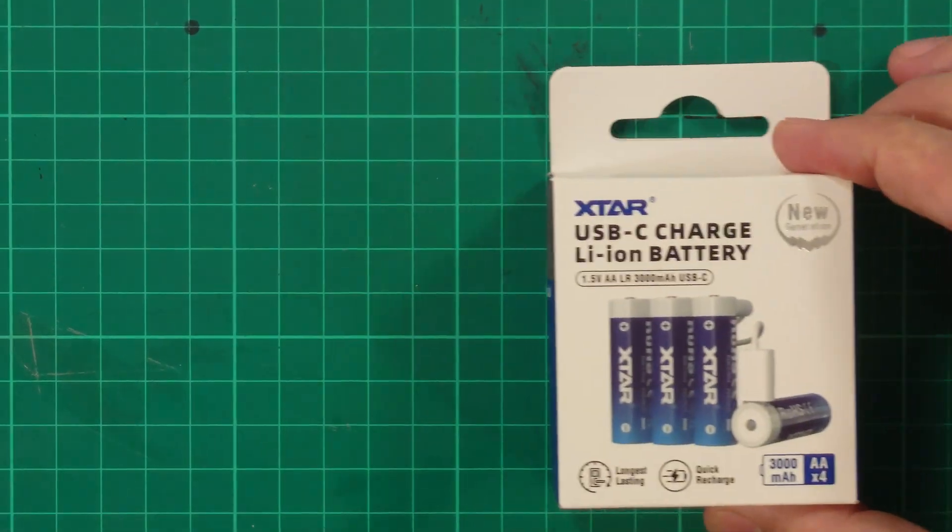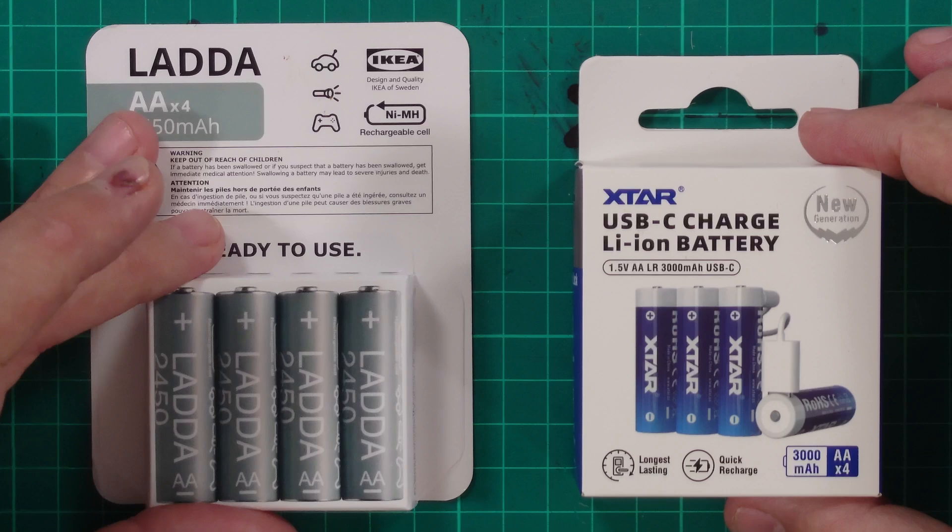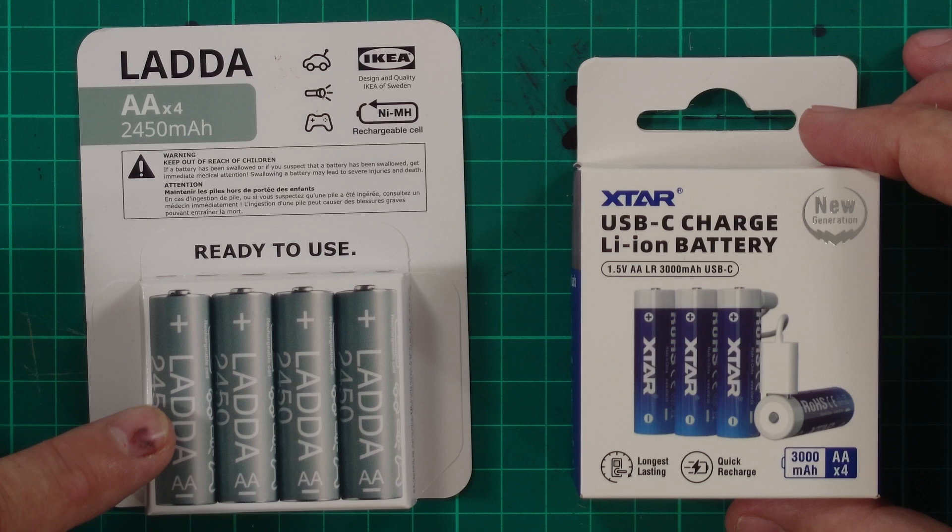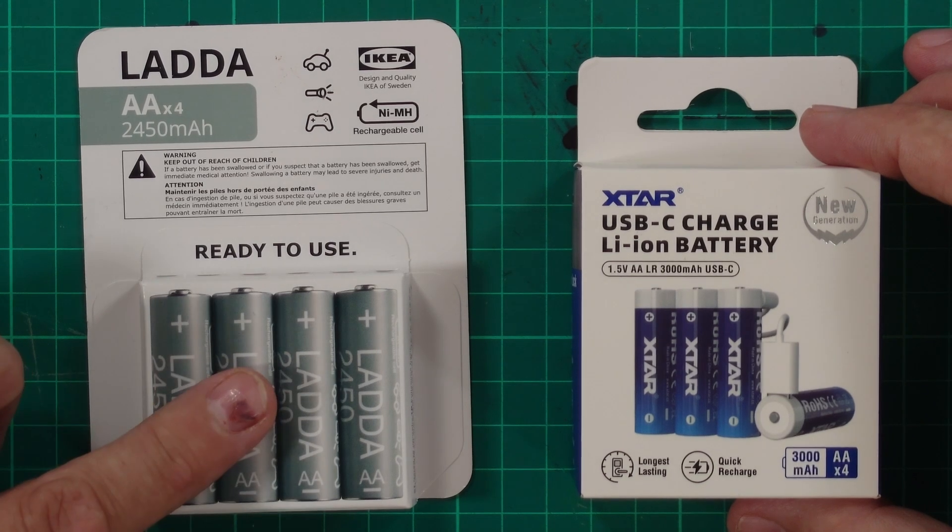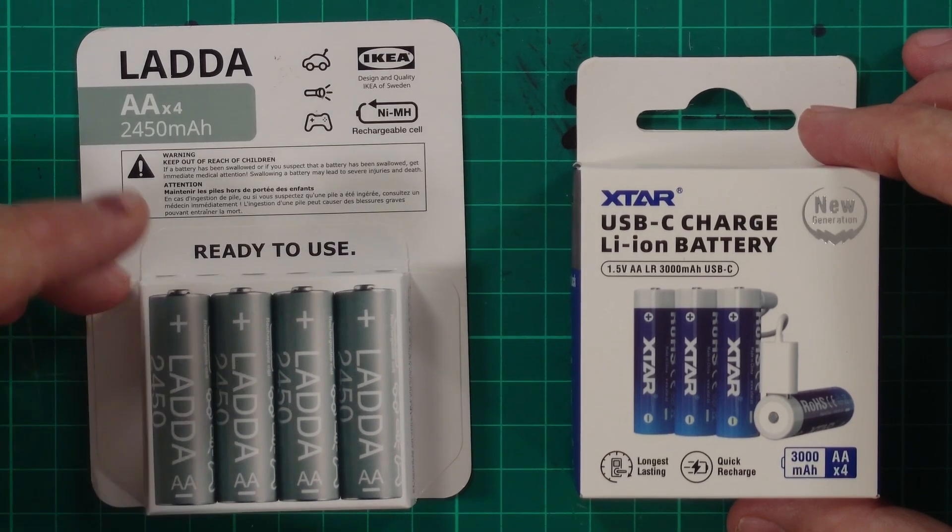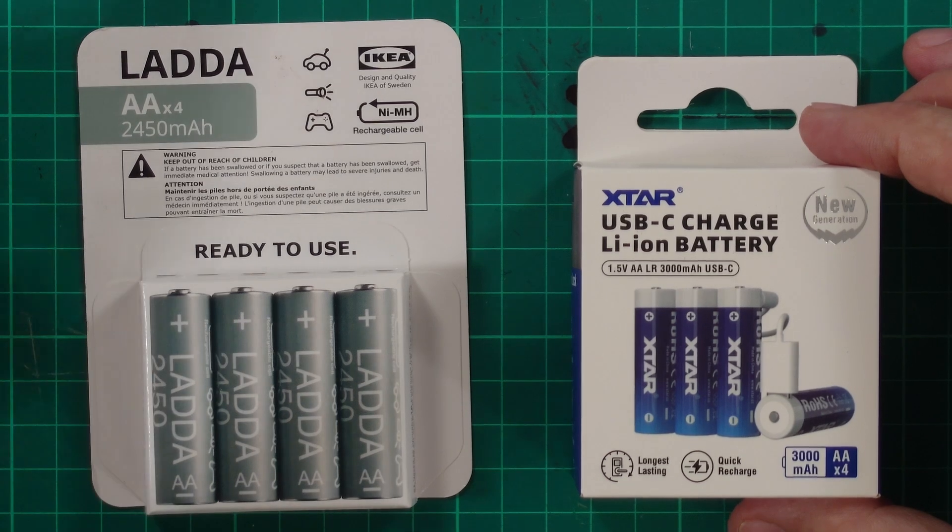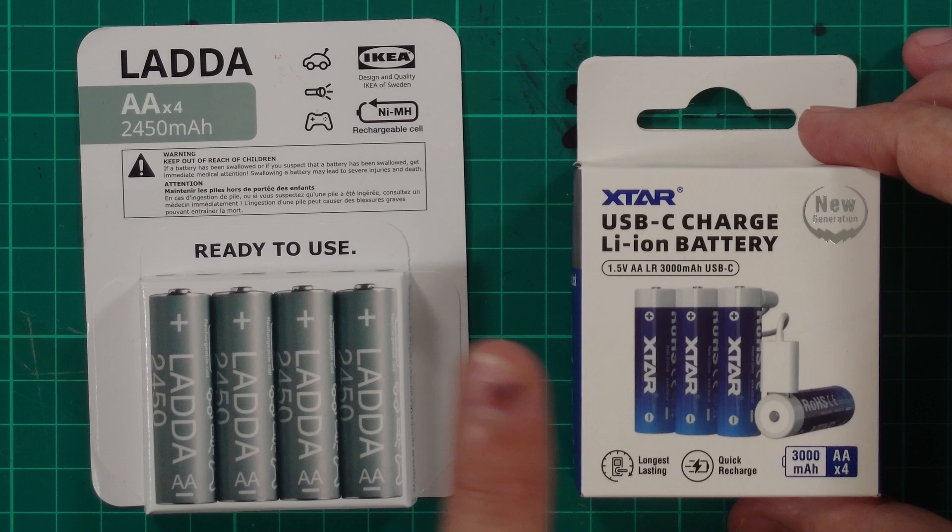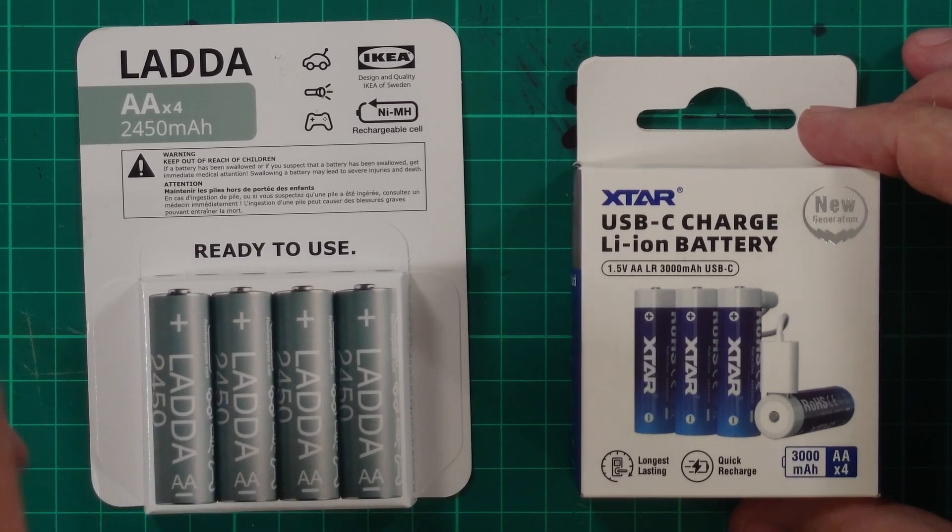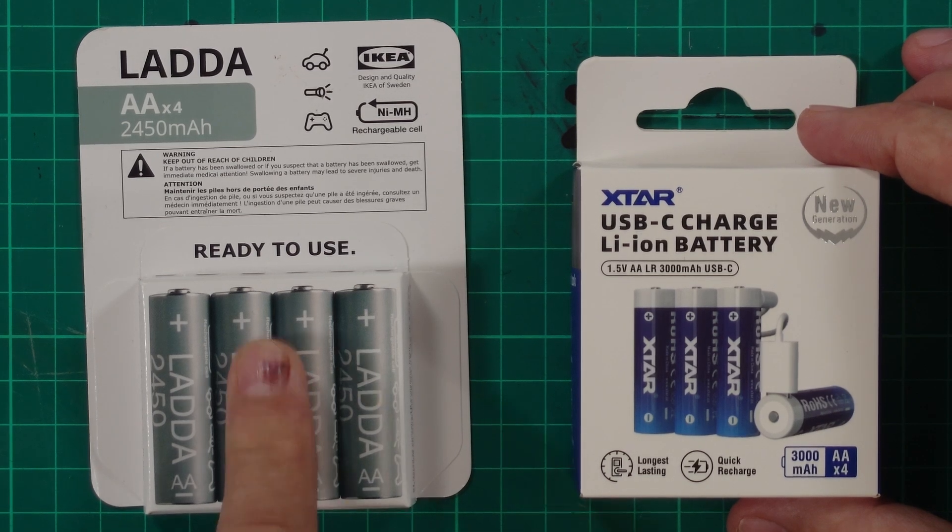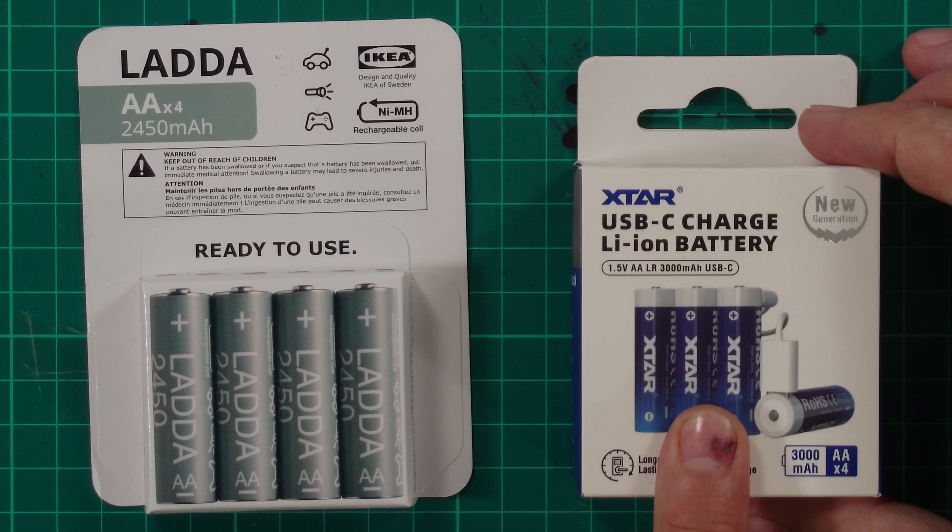Once the voltage drops to a certain level, the internal circuit disconnects the battery, preventing it from being damaged by over-draining. So we've been up till now using these. These are the IKEA ladder batteries, rated at 2450 mAh, and we chose these after several online reviews compared them favorably with the more expensive Eneloop AA. These can be recharged up to 500 cycles, which is less than half that of the X-Stars.